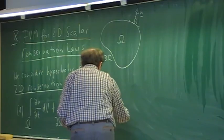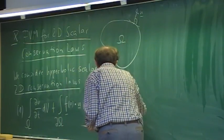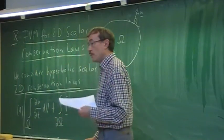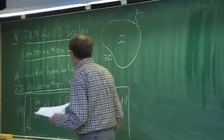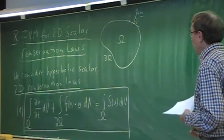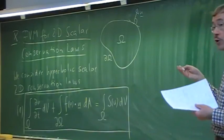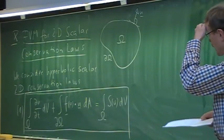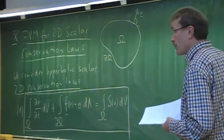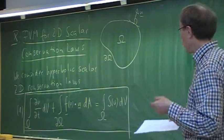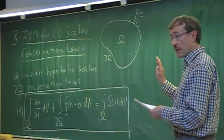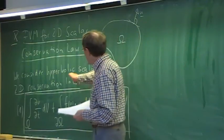The source term, if present, is an integral over the control volume with a scalar source s(u). This is similar to what we have in the basic conservation laws. The continuity equation is a good example — it has no source term. The momentum or energy equations would have source terms, such as viscous terms. However, by restricting ourselves to hyperbolic problems, we do not consider viscous effects.